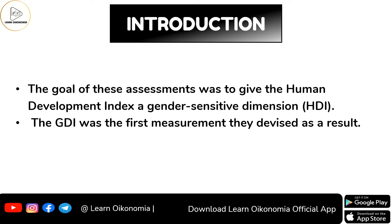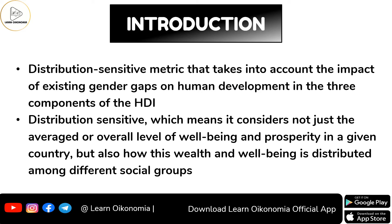The main goal of these assessments was to give a gender-sensitive dimension to the Human Development Index. In order to give a gender-sensitive dimension to the Human Development Index, the Gender Development Index was the first measurement that was devised. We consider the Gender Development Index as a distribution-sensitive metric, because it takes into consideration the impact of existing gender gaps which prevail within the three different components of the Human Development Index.